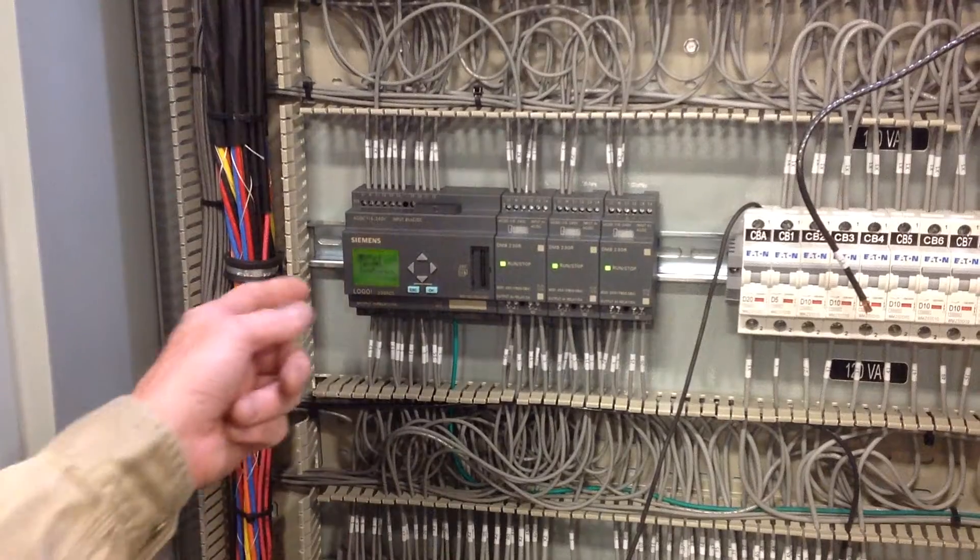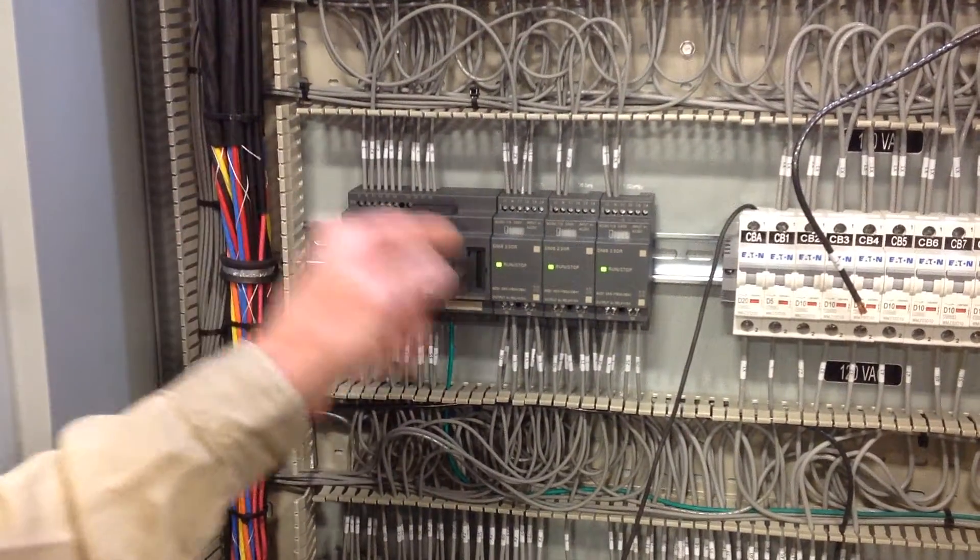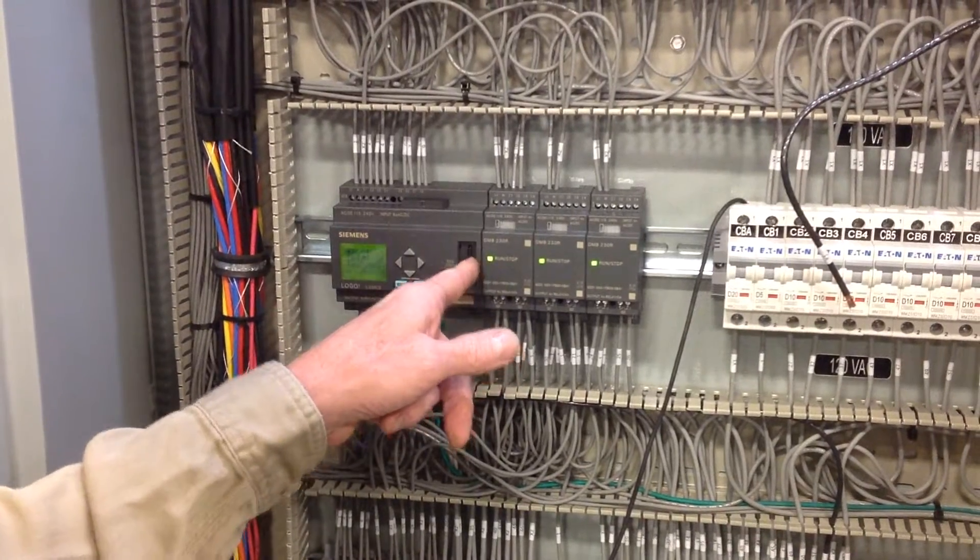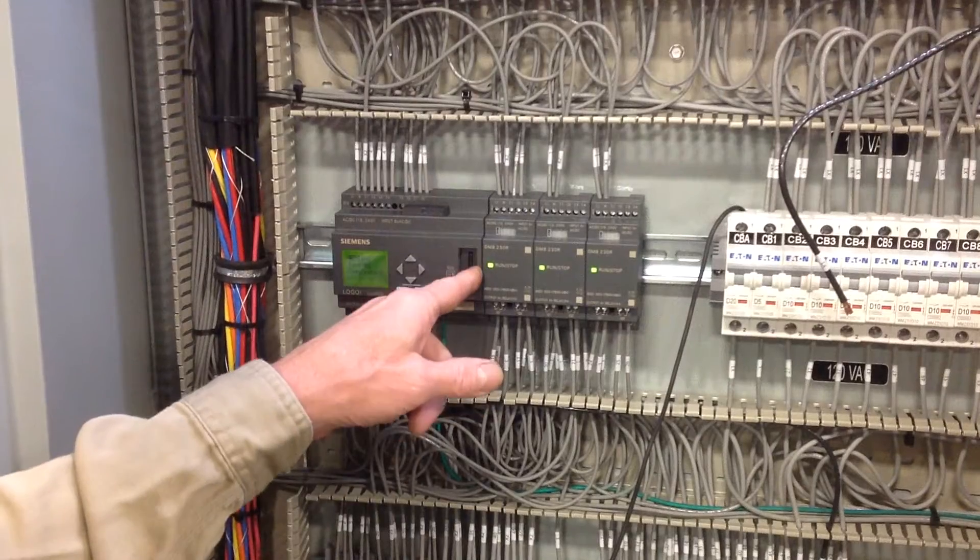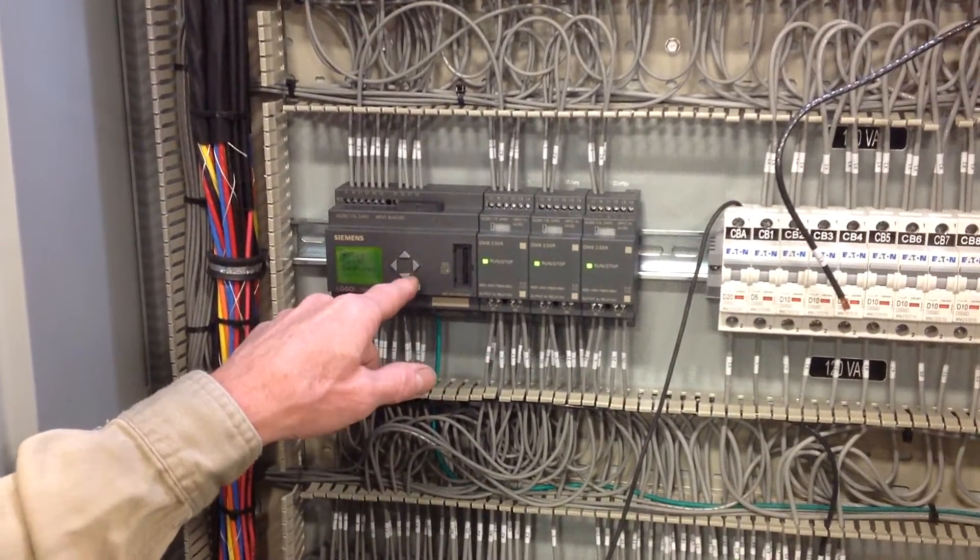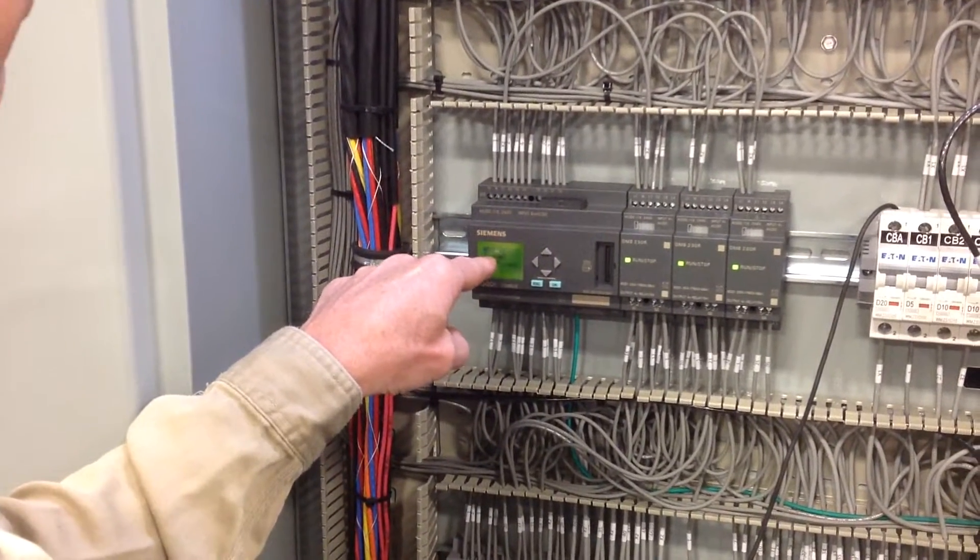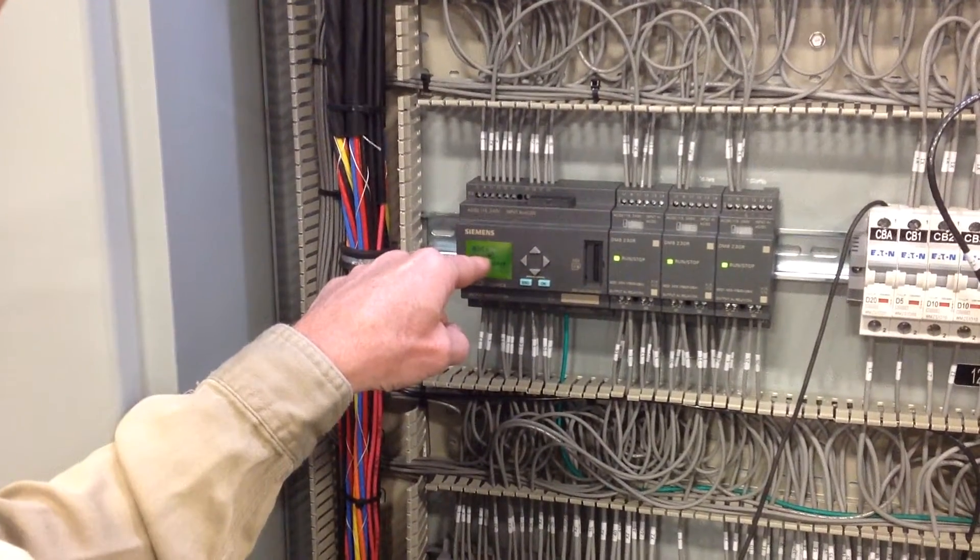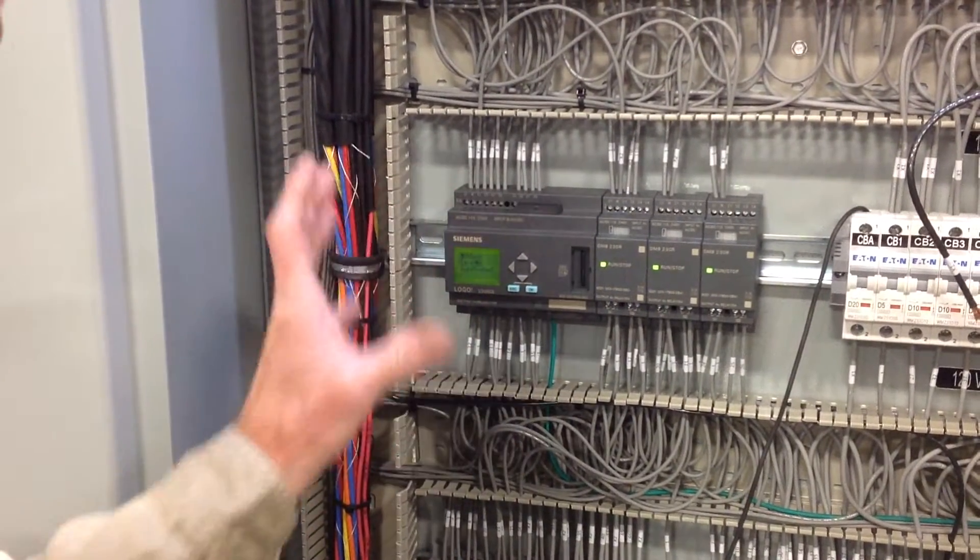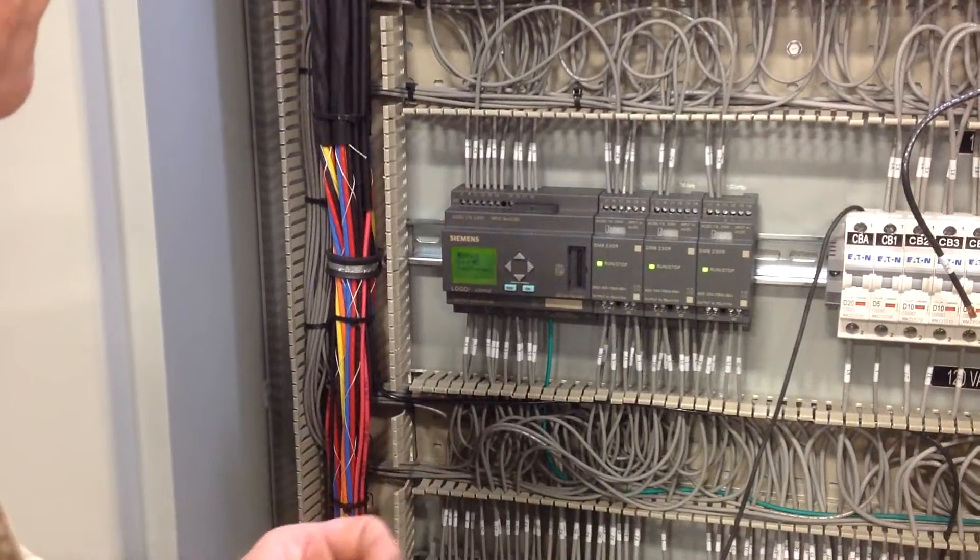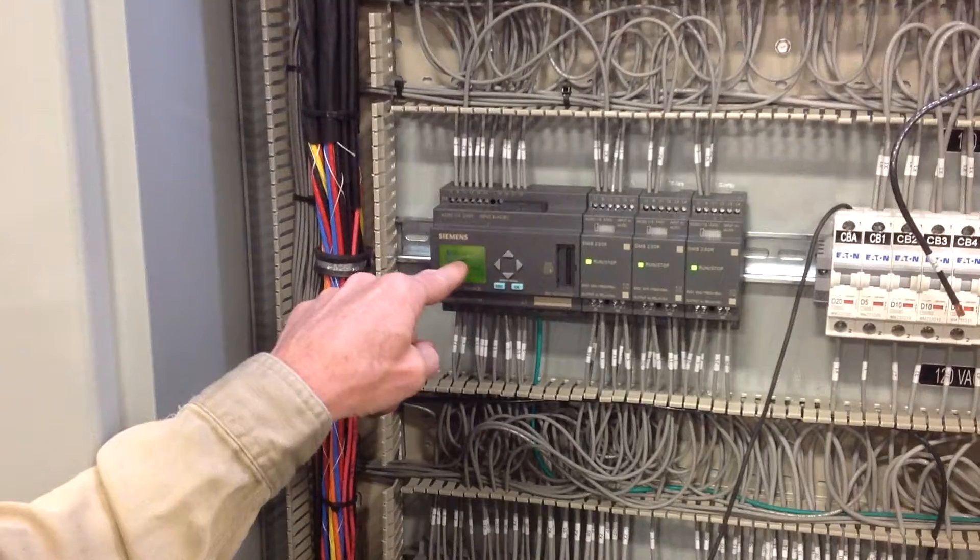And right now you have the option of loading the program from the logo onto the SD card or from the SD card onto the logo. In this case, of course, we want to load the program that's on the SD card. So we scroll down to that line item. It says card and it has an arrow and a pictorial of the logo. Now make sure you get that right because if you overwrite the card then you've lost the program. So we're going from the card to the logo and I've selected that.